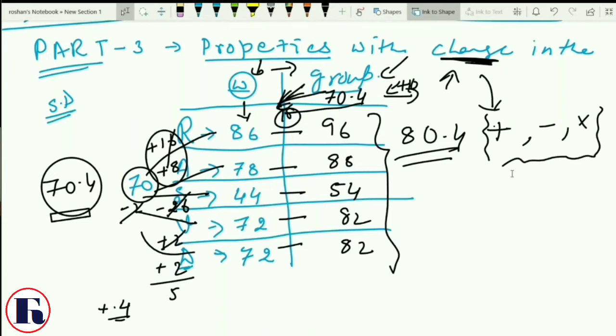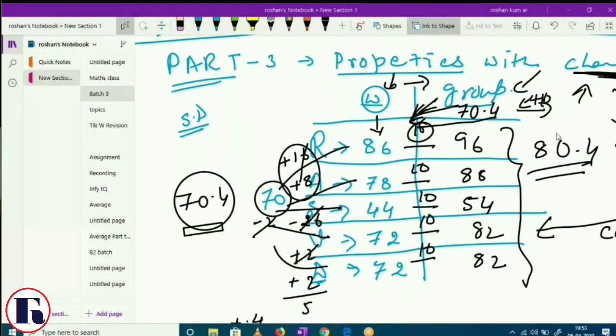Let me tell you for all these three operations. If each and every member of a group gone through this operation with a constant value, constant value, we've seen here everywhere the increase was 10 only, then only this property will come into picture. When each and every member of a group increased by 2, increased by 10, decreased by 2, decreased by 10, multiplied by 2, multiplied by any constant number, in that case average will also reflect the same change. Average will also reflect the same change.